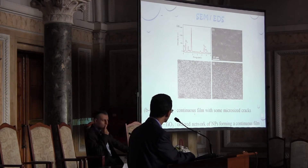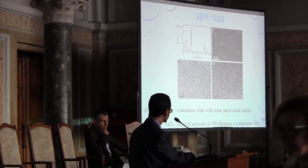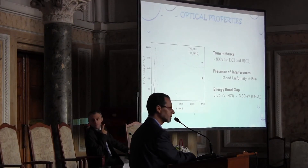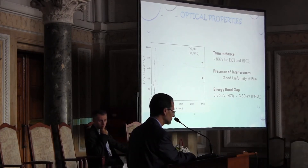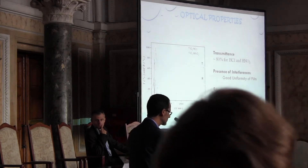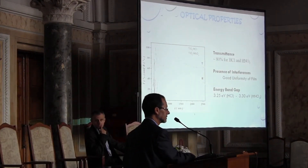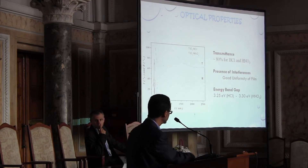FESEM analysis shows that for HCl you have a continuous film with some micro-sized pores or cracks, but for nitric acid you have a very continuous film formed of nanoparticles. UV transmittance measurements show interferences indicating surface quality. The transmission is about 80%, and there is a slight difference in energy band gap between HCl and HNO₃ samples.